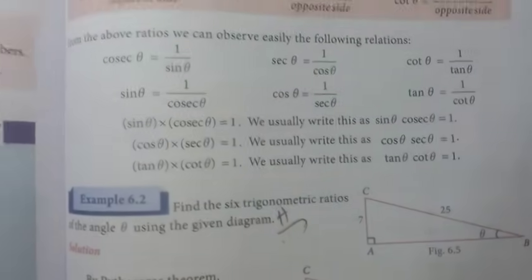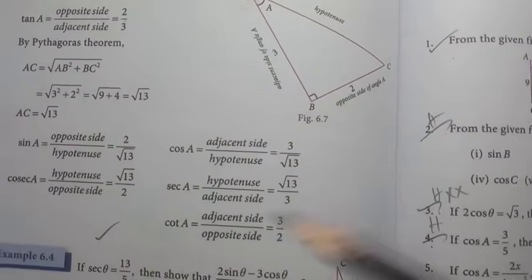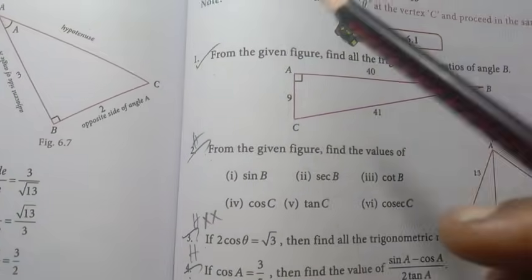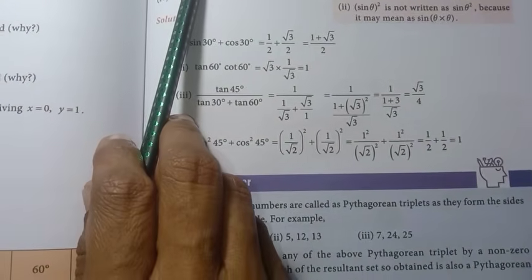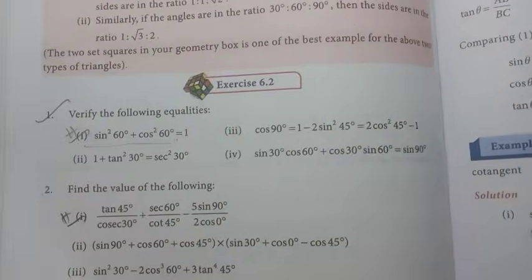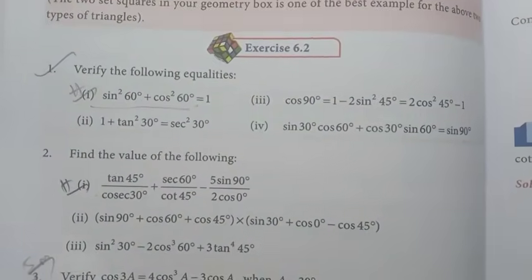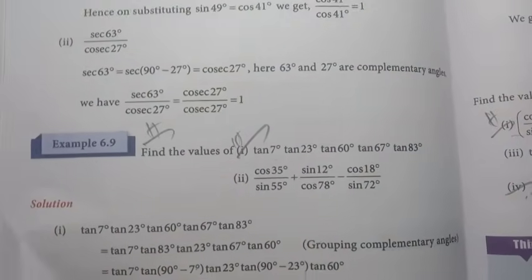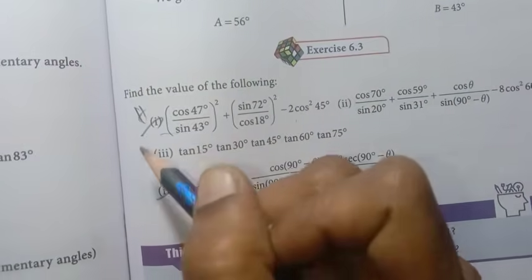Chapter 6: Trigonometry. Page 224, Example 6.1, Example 6.2 important, Example 6.3, Example 6.4. Exercise 6.1: 1st, 2nd, 3rd, 4th, 7th, 8th, 9th — 11 important questions. Page 231, Example 6.6 important. Exercise 6.2: 1st, 2nd, 3rd, 4th — 11 important questions. Page 234, Example 6.8, Example 6.9 important. Exercise 6.3: 1st.